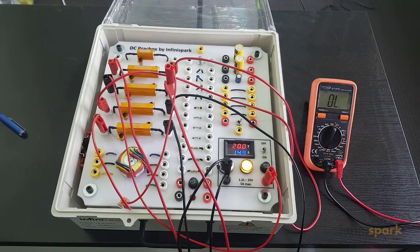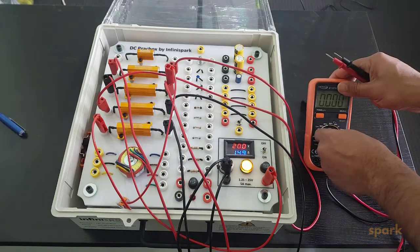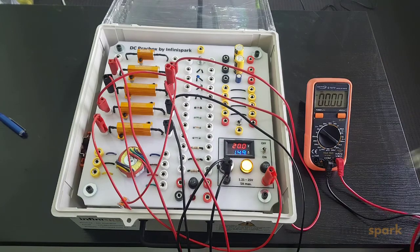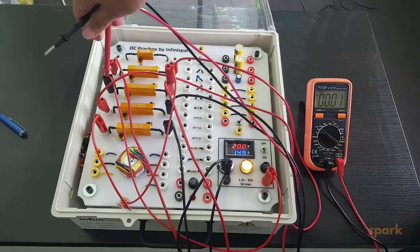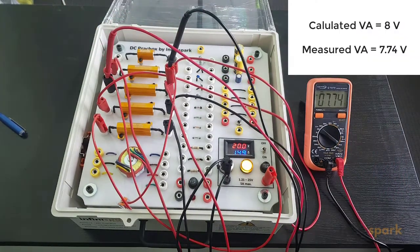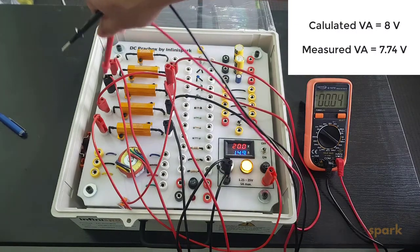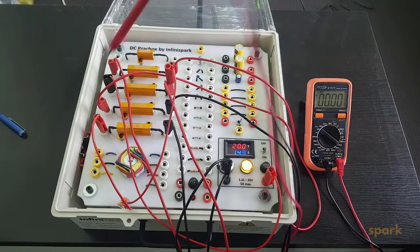Let's measure all the voltages individually: the voltage across resistor A, which is the 5 ohm resistor, and the voltage across resistor D.